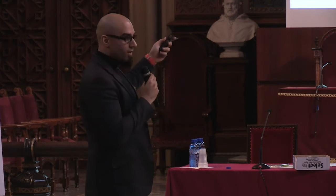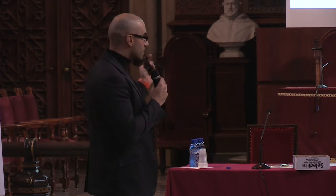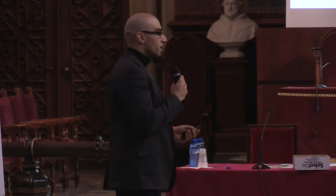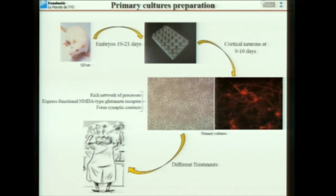Once the primary culture is done, we have to wait up to 9 to 10 days to perform the assays that are the primary target. Why do we have to wait? Because the excitotoxicity disease context is based on the NMDA receptor — we have to wait 9 to 10 days to allow the neurons to reform their connections and develop their NMDA channels, which are the main element in the excitotoxicity context.